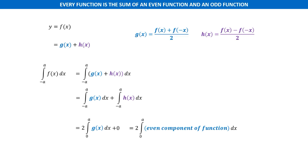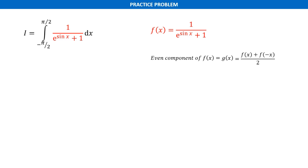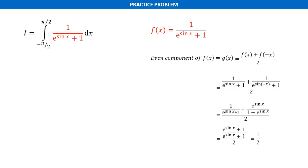We will use this result to solve the initial problem: the integral of 1 over (e^(sin x) + 1) with lower limit −π/2 and upper limit π/2. Let f(x) equal the integrand. This function is neither even nor odd. However, we can find the even component of this function. Let g(x) be the even component of f(x), so g(x) = [f(x) + f(−x)] / 2. By substituting the values of f(x) and f(−x), we get g(x) = 1/2.